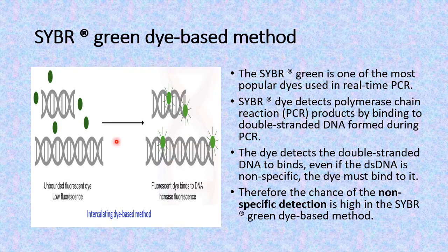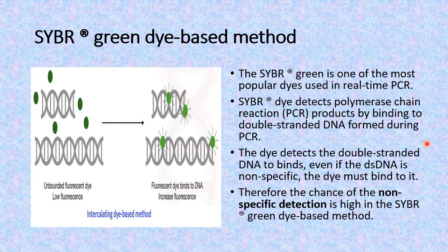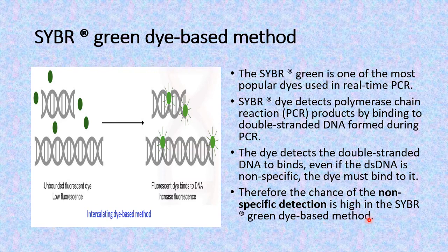The SYBR Green dye can bind anywhere within the DNA molecule. The only condition that must be fulfilled for its binding is that it has to be a duplex molecule. So the chances of nonspecific detection are very high in this method — it can bind even to segments of DNA when the primer anneals with the template strand. Wherever any type of double-stranded structure is present, it can produce fluorescence.